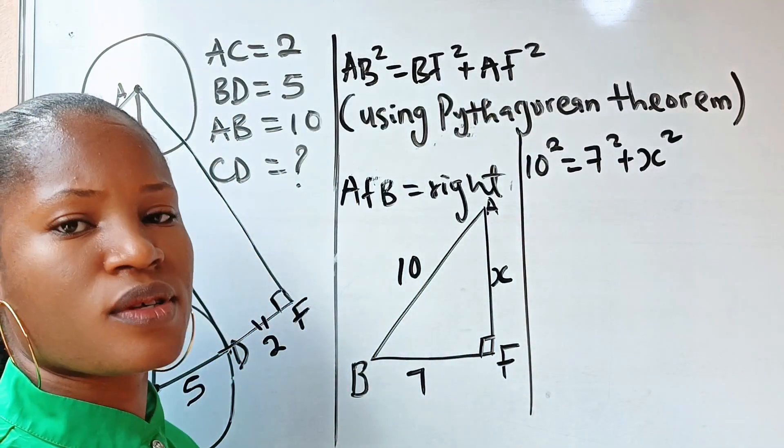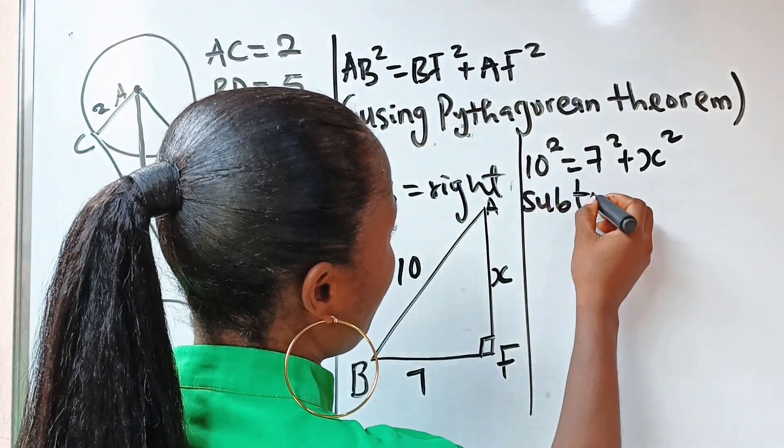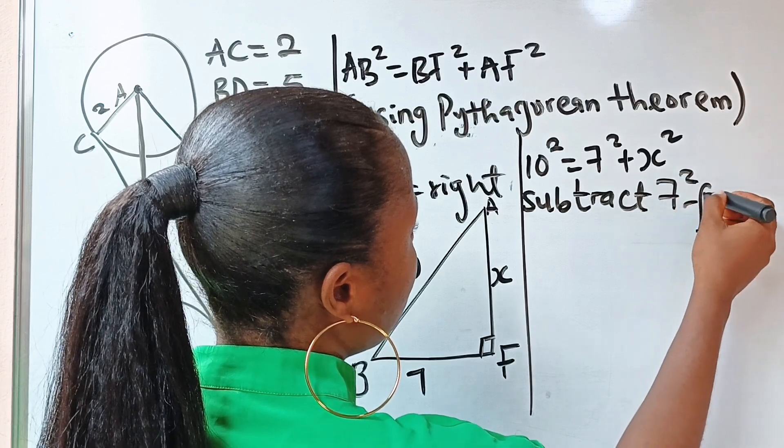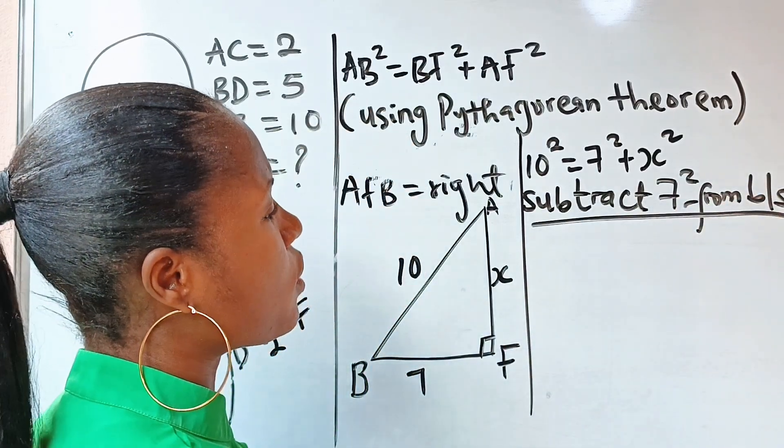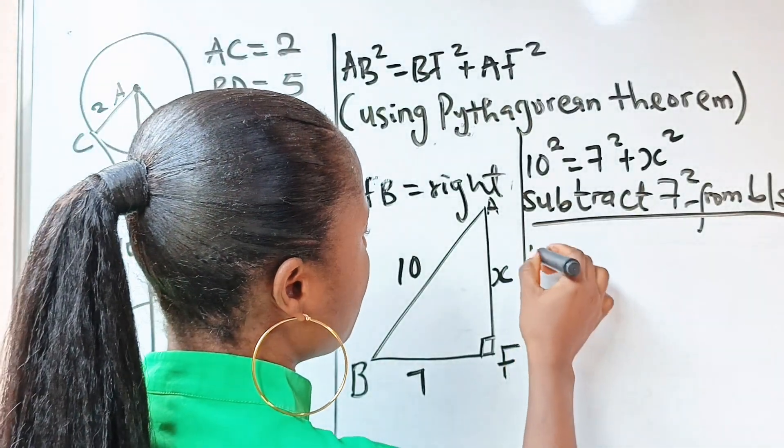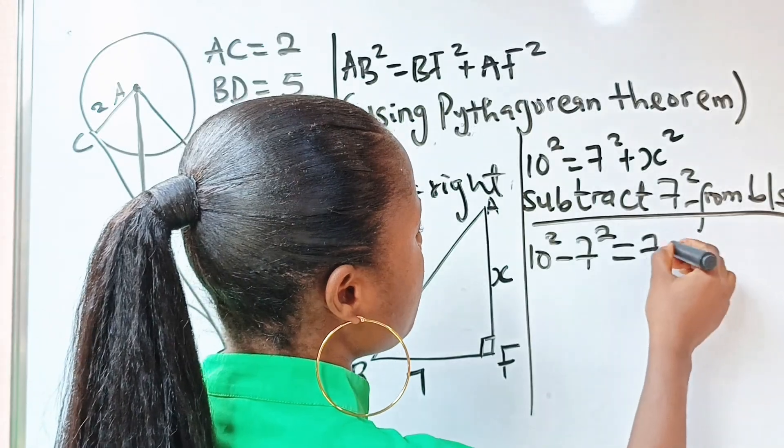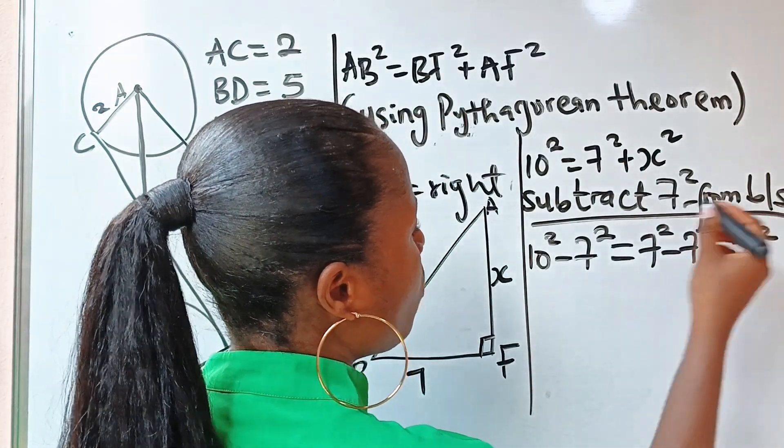So if we solve further, we have, let's subtract 7 squared from both sides. So if we do that, we have 10 squared minus 7 squared is equal to 7 squared minus 7 squared plus x squared.